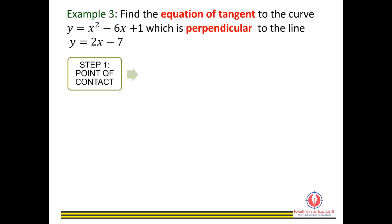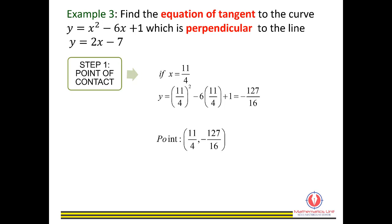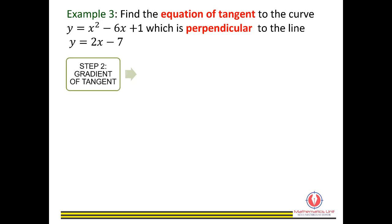Now find the point of contact. Since x equals 11 over 4, substitute into the curve equation to get y equals negative 127 over 16. So the point of contact is (11/4, −127/16). Next, find the gradient of the tangent. Since they are perpendicular, gradient of tangent times 2 equals negative 1. Rearrange to get gradient of tangent equals negative 1 over 2.